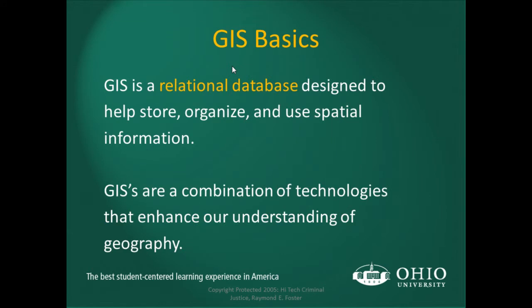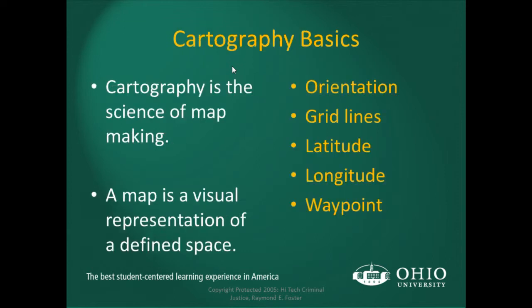GIS is a relational database designed to help store organized spatial information. Essentially, it is a database that contains information about spatial or map-based information that can be a point, a line, or a polygon, which we'll talk about in a bit. GIS uses a combination of technologies to enhance the understanding of geography, and it may contain attributes that give you more detailed information about a particular piece of geography.